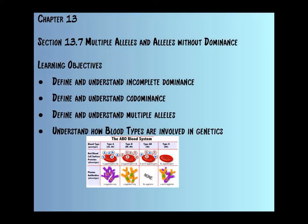This next section is going to be 13.7, and we're going to be looking at multiple alleles and alleles without dominance. Things that we will learn: we're going to define and understand incomplete dominance, codominance, and multiple alleles, and understand how blood types are involved in genetics. It's one of the simplest ways to understand genetics in terms of how alleles and traits get passed on hereditarily.